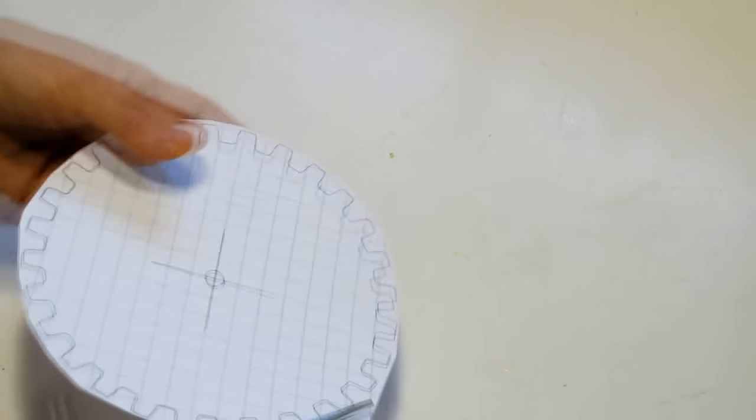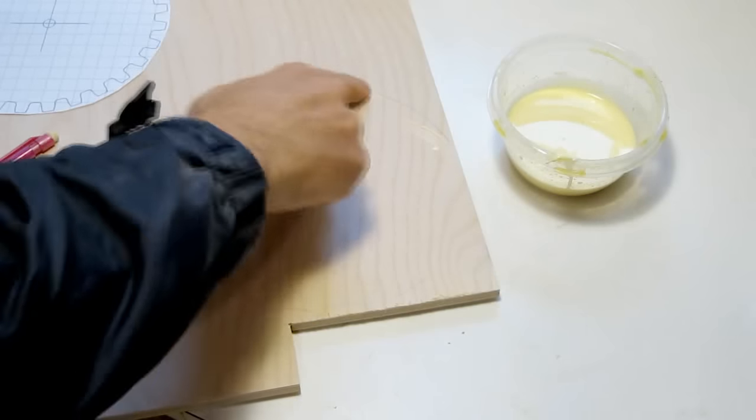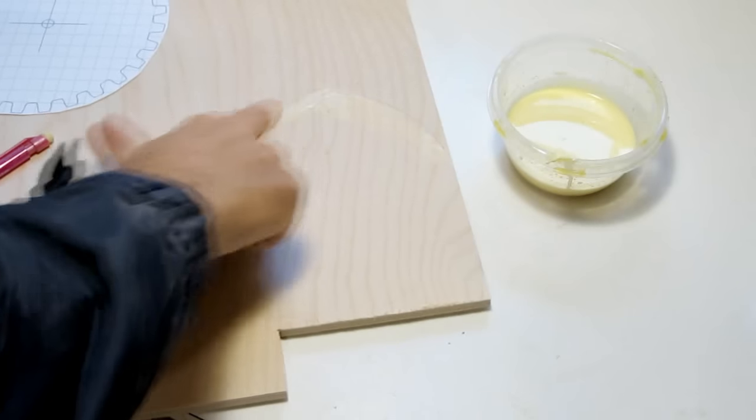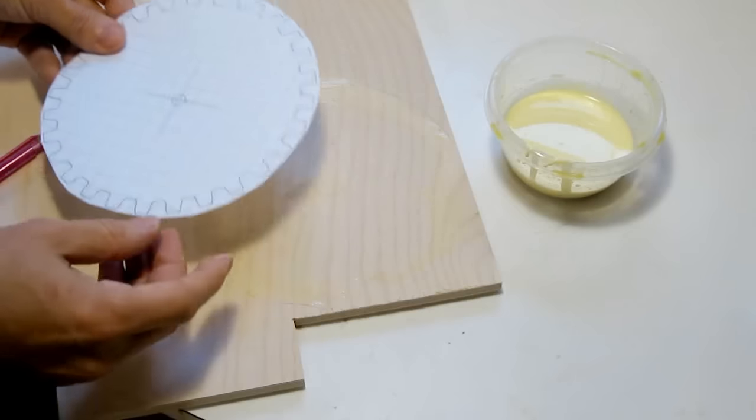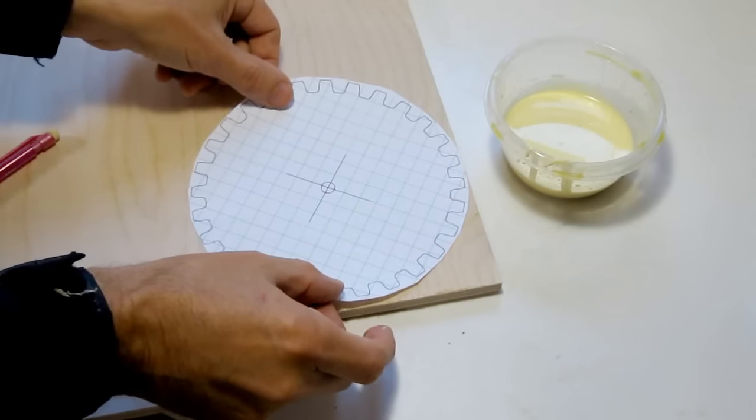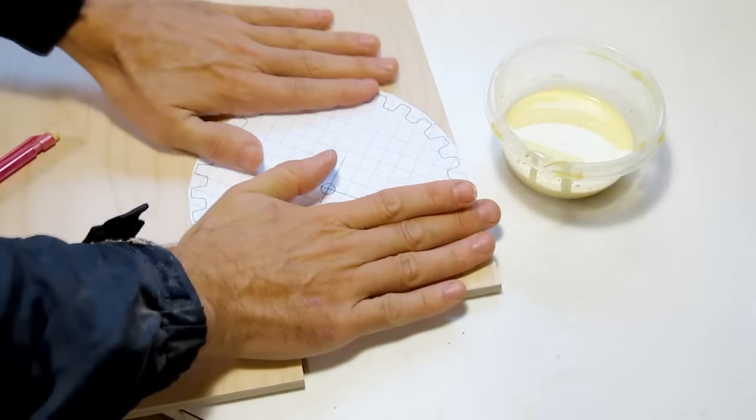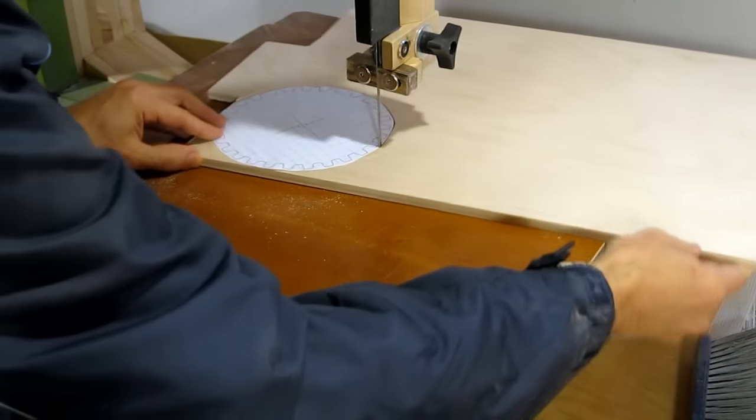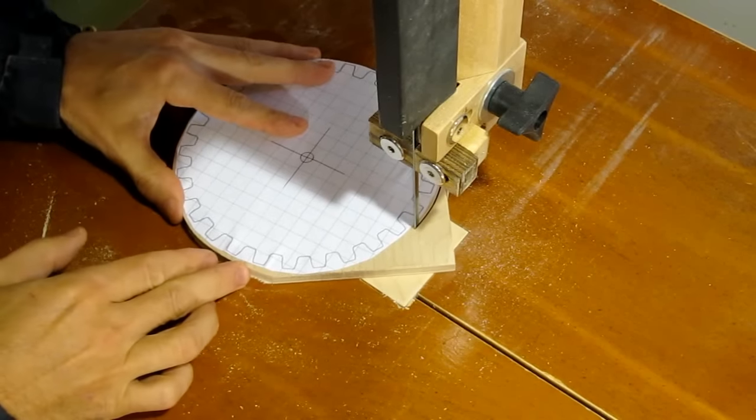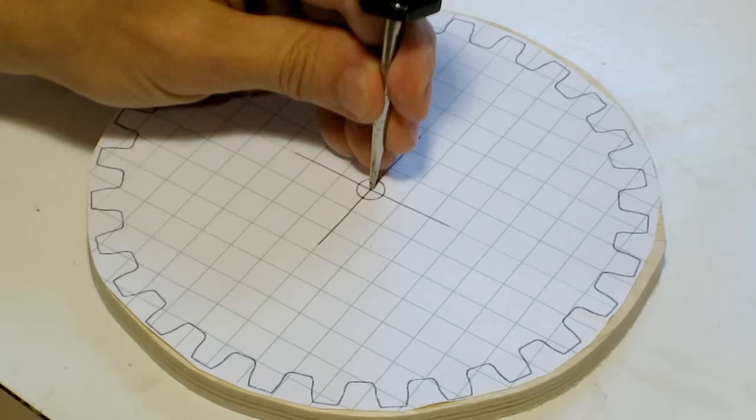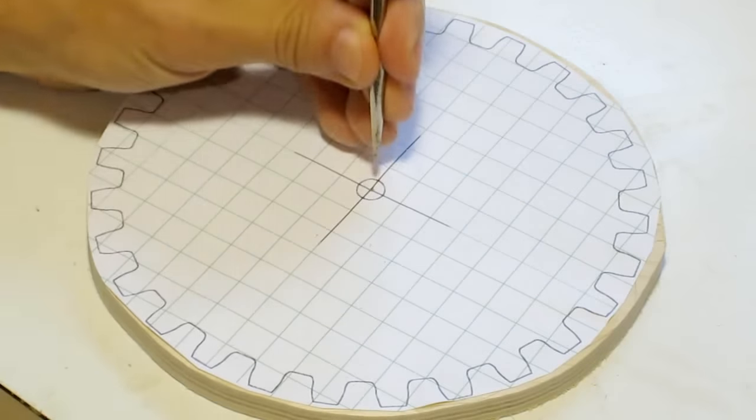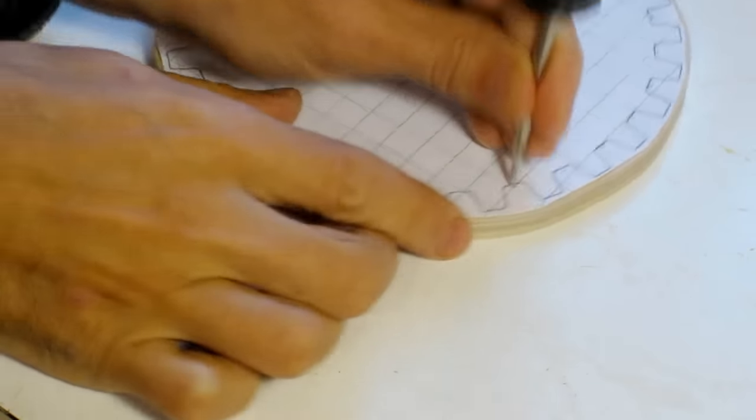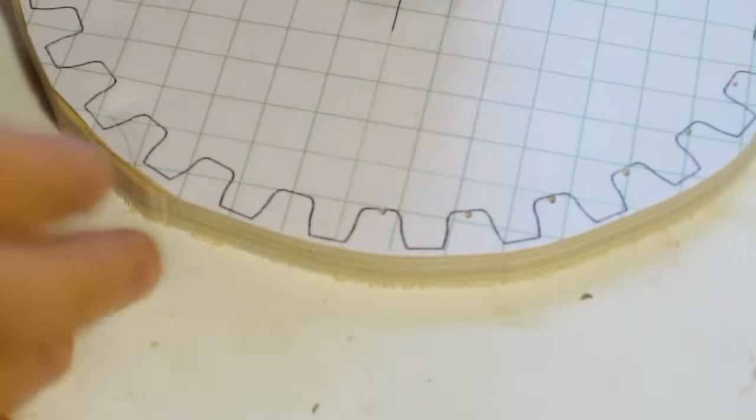The next step is to cut out the template that you just printed and glue that onto a piece of plywood. You don't need to use a lot of glue, in fact the less glue you use the better. Next we cut out the approximate shape of the circle around the gear template. Now we use an awl to punch a hole in the center of the template, as well as a hole between each pair of teeth around the gear.